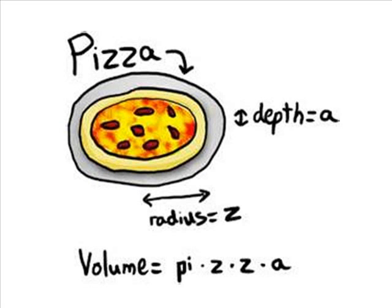How about a pizza pie? If you'd like to find the volume of this pizza, you would need the area of the surface, which is a circle, and the depth. To find the volume of the pizza, simply multiply the area of the circle, pi r squared, times the depth. In this picture, pi times z times z times a.